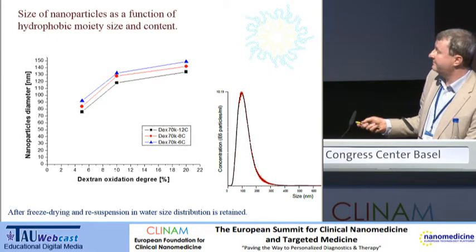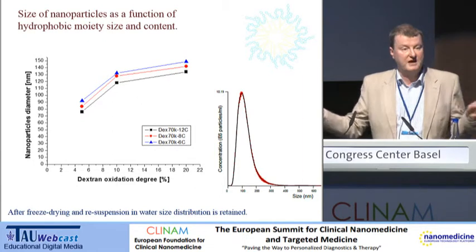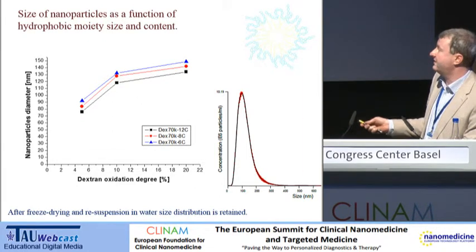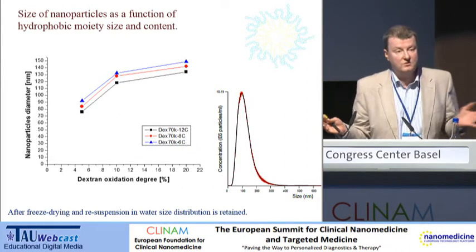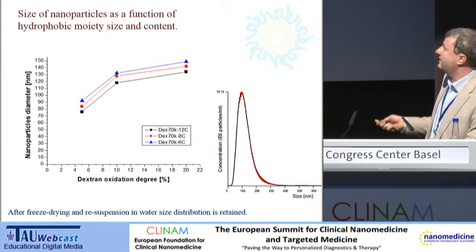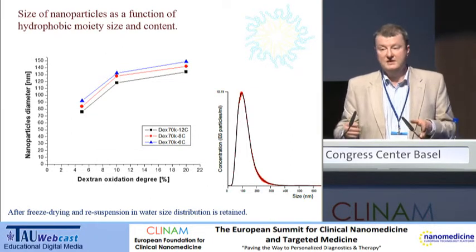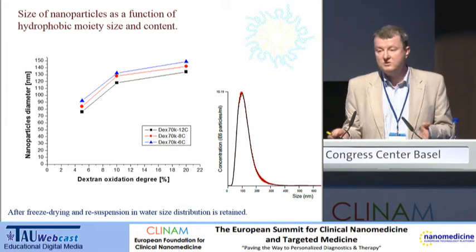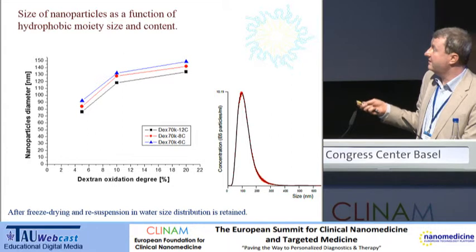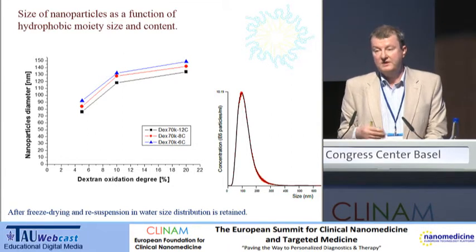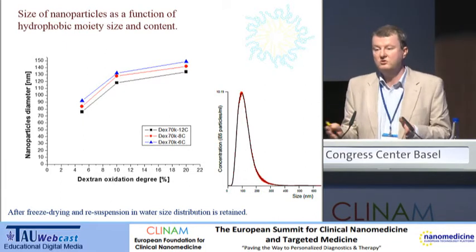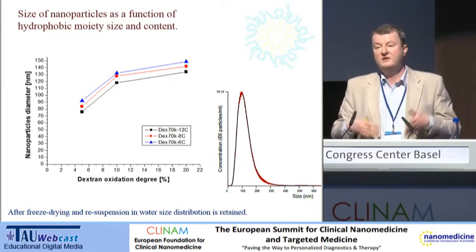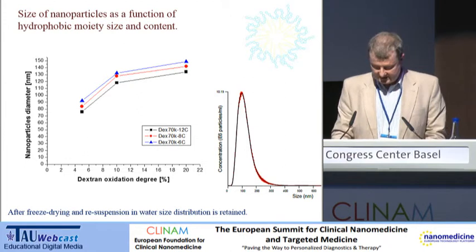By changing the dextran oxidation degree — the number of side groups — and the length of the lipophilic side chain, we can manipulate the diameter of nanoparticles. We are able to make nanoparticles starting from about 20 nanometers up to 200 nanometers, with a fairly narrow size distribution that repeats independently of the measurement method. We can also manipulate the charge of nanoparticles by oxidizing some side groups not only to aldehyde but to carboxylic groups, or leaving more amine groups, so we can really modify and influence the zeta potential.